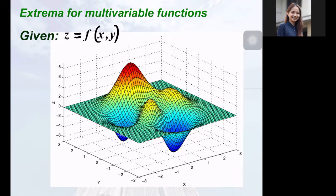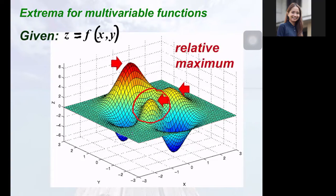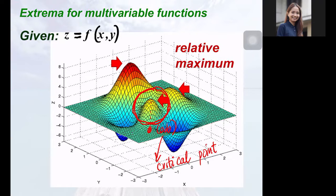For the case of functions in two variables, the graph is in the R3 space, like in this example. At this particular part of the graph, we have a relative maximum value. This maximum value corresponds to a point AB on the Cartesian plane. This point AB is a critical point. Notice here that critical points are not real numbers but ordered pairs, because our function has two variables. Furthermore, this maximum value is maximum only for a certain area on the xy plane. Hence, these are relative maximum values. In the lower part of the graph, you can see relative minimum points.